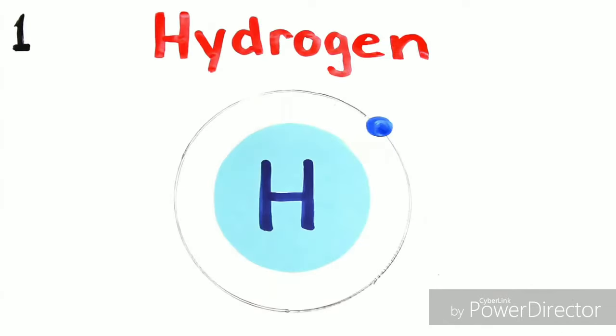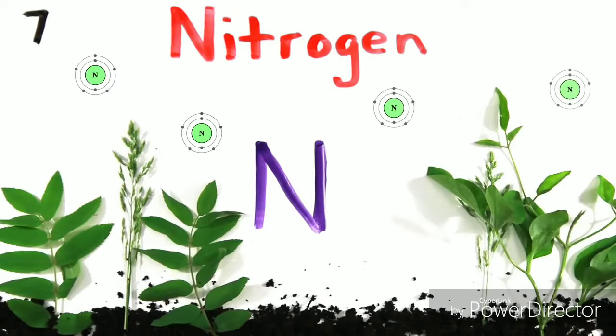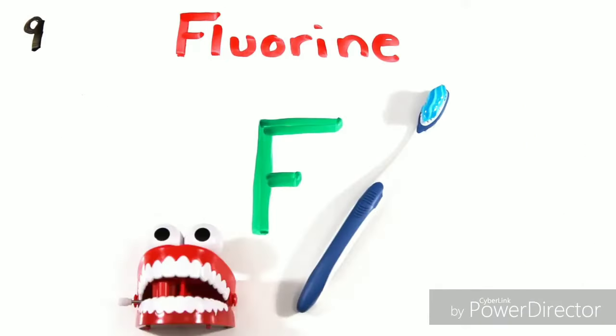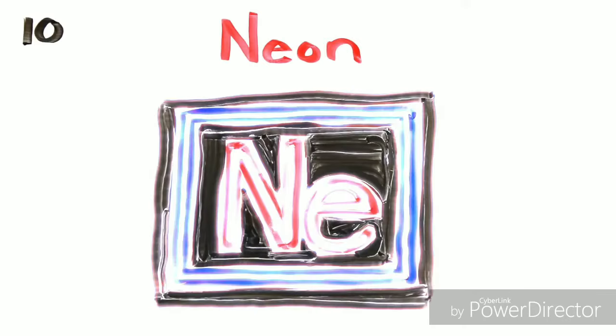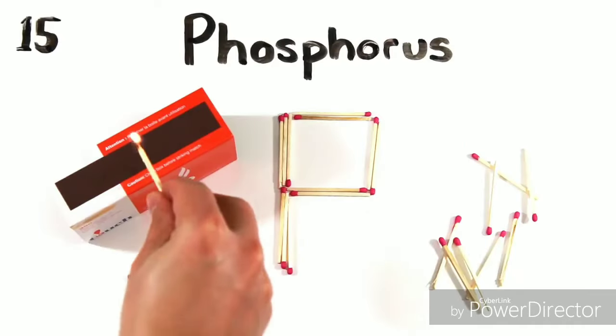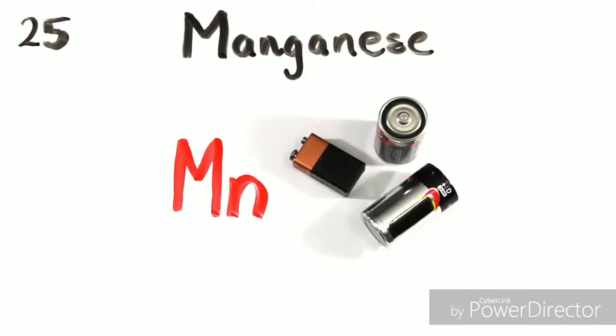There's hydrogen and helium, lithium, beryllium, boron, carbon everywhere. Nitrogen all through the air with oxygen so you can breathe and fluorine for your pretty teeth. Neon to light up the signs, silicon, phosphorus, then sulfur, chlorine, then argon and manganese.